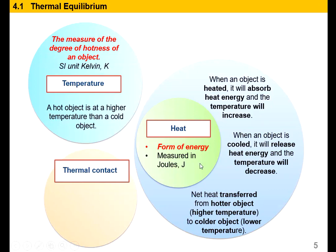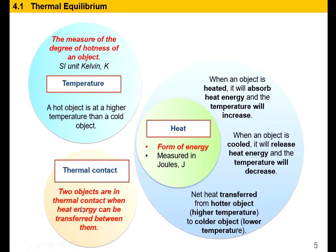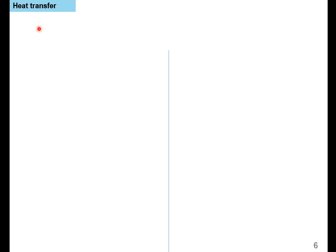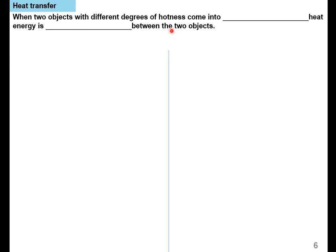Thermal contact: two objects are in thermal contact when heat energy can be transferred between them. Two objects can transfer heat as long as they are in thermal contact. When two objects with different degrees of hotness come into thermal contact, heat energy is transferred between them. Note that they only say heat energy can be transferred when in thermal contact — they do not specify that heat only transfers from cold to hot or from hot to cold.